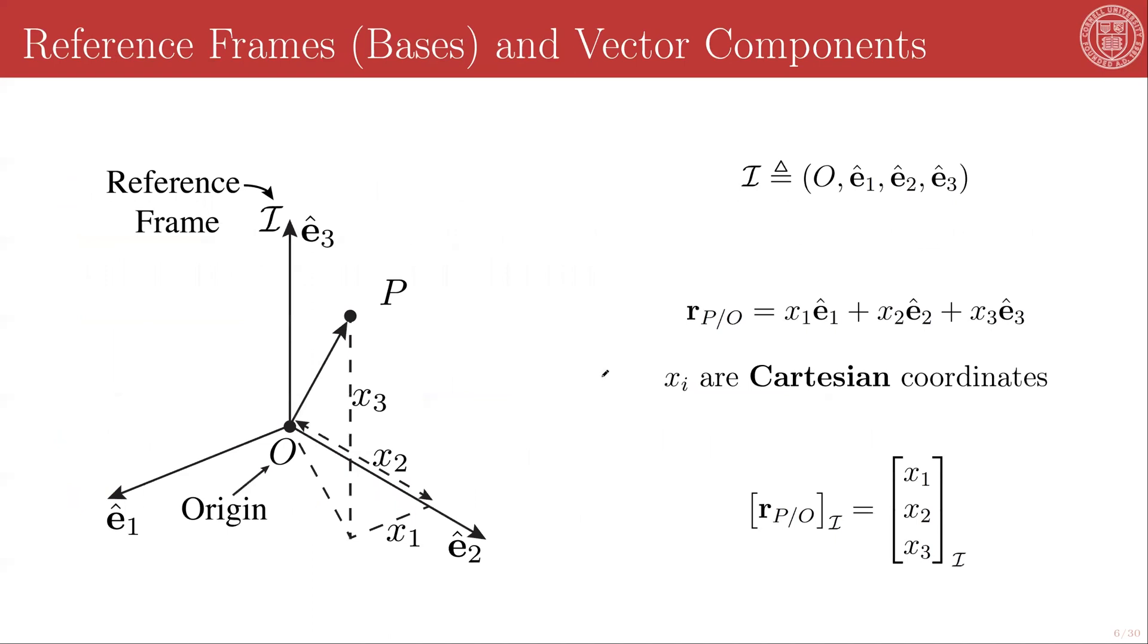And those three vectors taken together form what we in Dynamics know as a reference frame. So the way that we will be defining reference frames in this course is we will give them a name. So this reference frame is called I, and it has three unit vectors associated with it, e_1, e_2, and e_3.